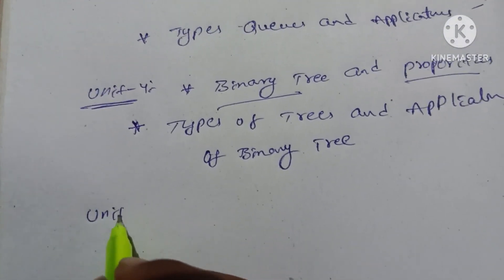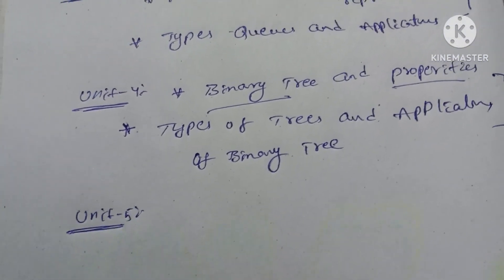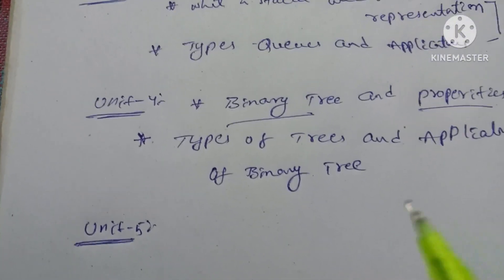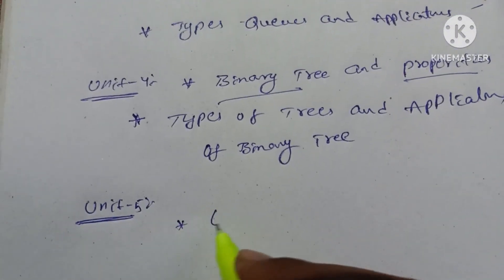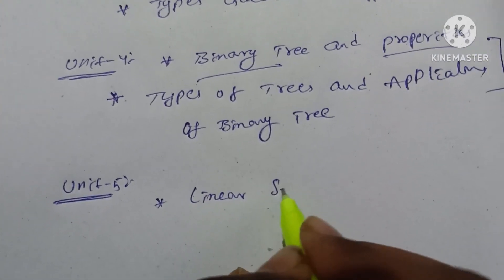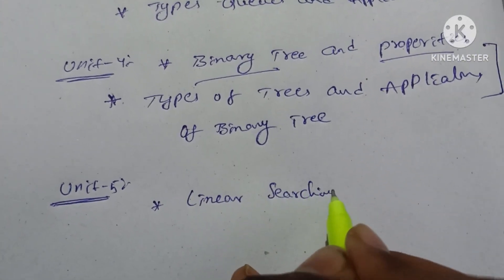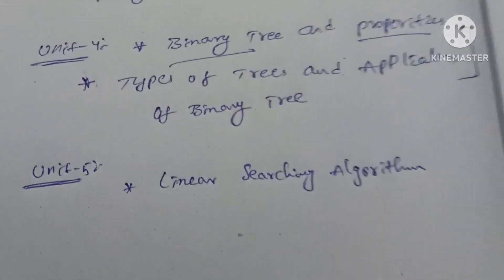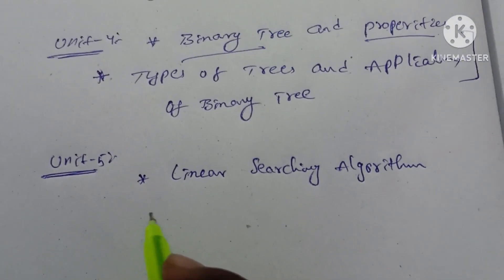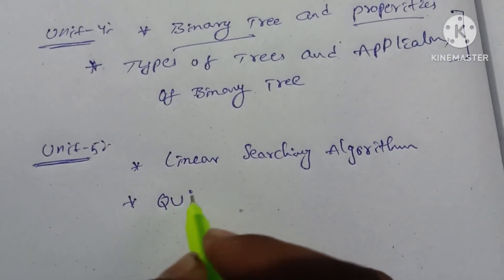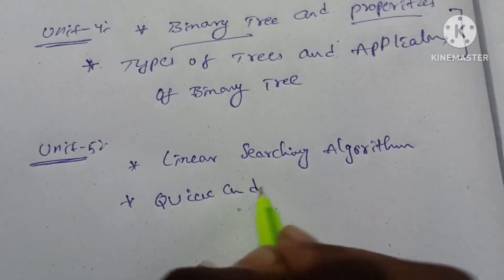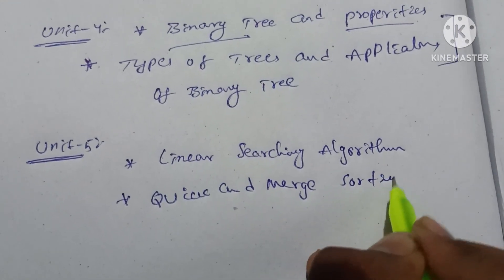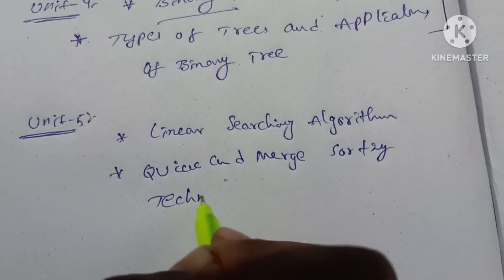Let's look at Unit 5. The linear searching algorithm is one of the important questions. Explain quick sort and merge sorting techniques with examples.